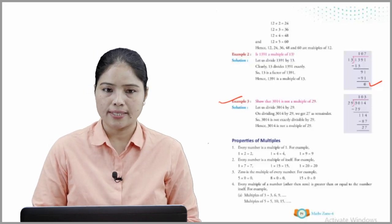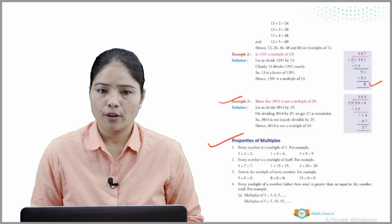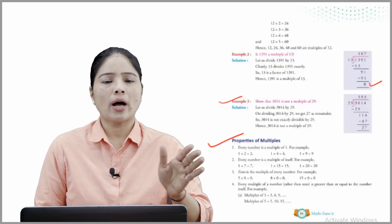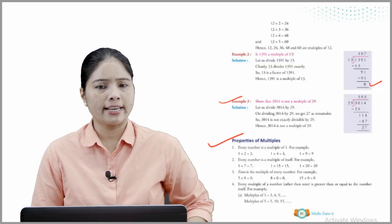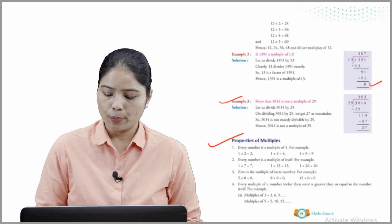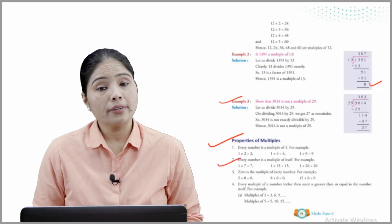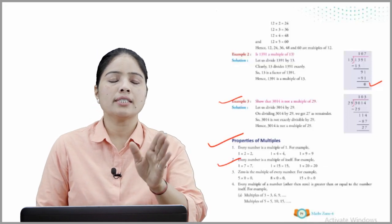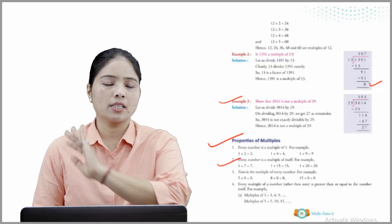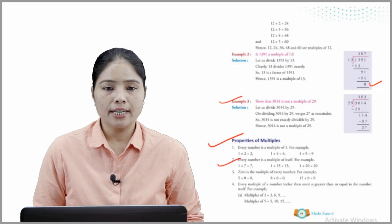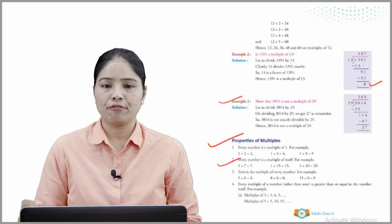Now, properties of multiples. Property 1: Every number is a multiple of 1 — for example, 1×2=2, 1×4=4, and 1×9=9. Property 2: Every number is a multiple of itself — for example, 7×1=7, 15×1=15, 20×1=20. Property 3: 0 is a multiple of every number — for example, 5×0=0, 8×0=0, and 15×0=0.